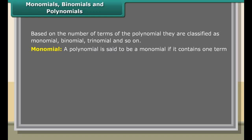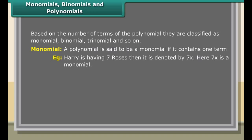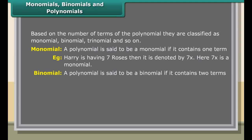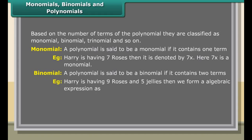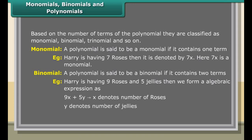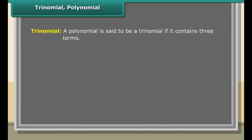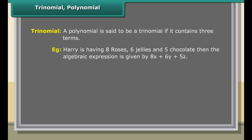Based on the number of terms, polynomials are classified as monomial, binomial, trinomial, and so on. A polynomial with one term is a monomial — for example, if Harry has seven roses, it is denoted by 7X, so 7X is a monomial. A polynomial with two terms is a binomial — for example, if Harry has nine roses and five jellies, the expression is 9X plus 5Y, where X denotes roses and Y denotes jellies. 9X plus 5Y is a binomial.